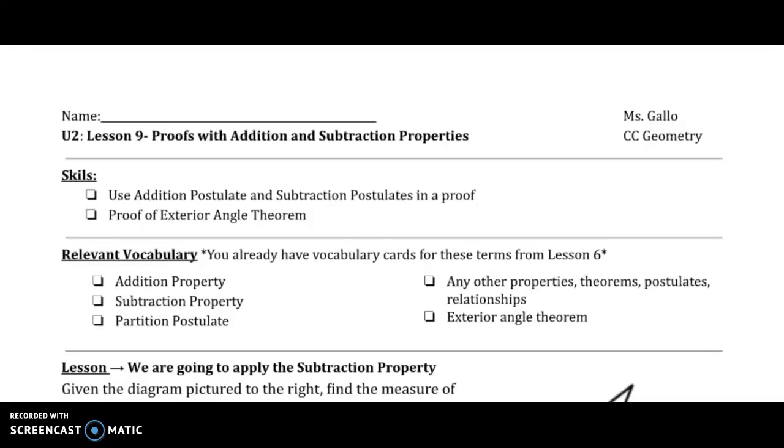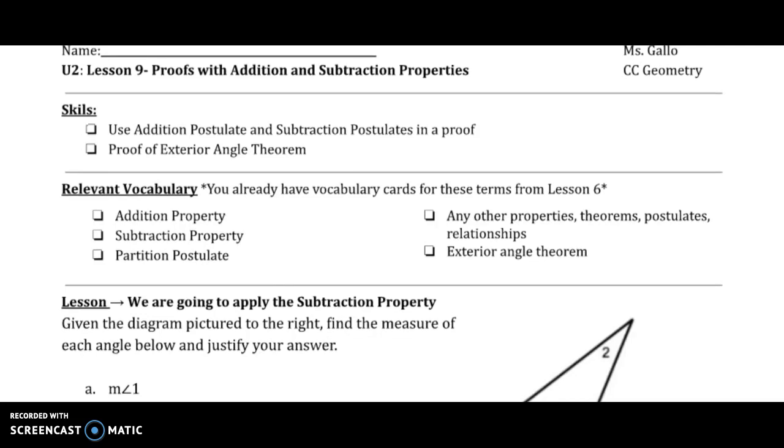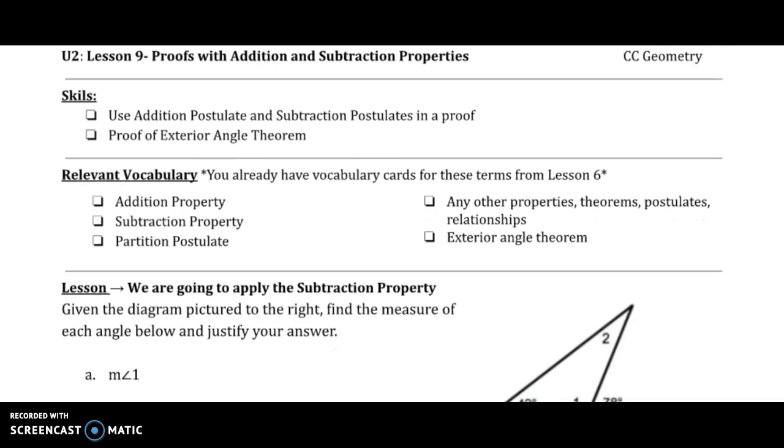Unit 2 Lesson 9 - we're going to work with the addition and subtraction properties of equality. On your index cards from Lesson 6, it says postulate, but it's actually a property of equality. You can adjust that, though you don't have to write postulate or property in your proof, just addition or subtraction.